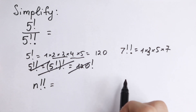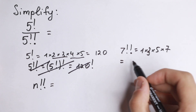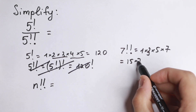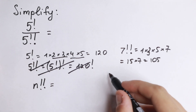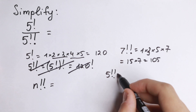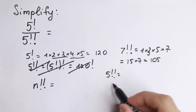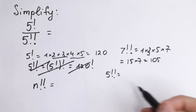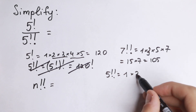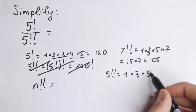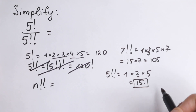So in our case, we have 5 double factorial. Since 5 is our odd number, we go up to 5 using only odd numbers: 1, then not 2 but 3, and then not 4 but 5. So 5 double factorial equals 1 times 3 times 5, which equals 15.